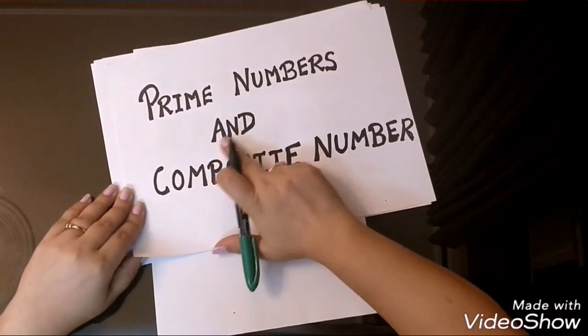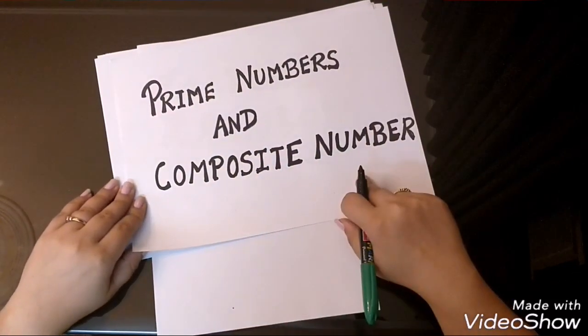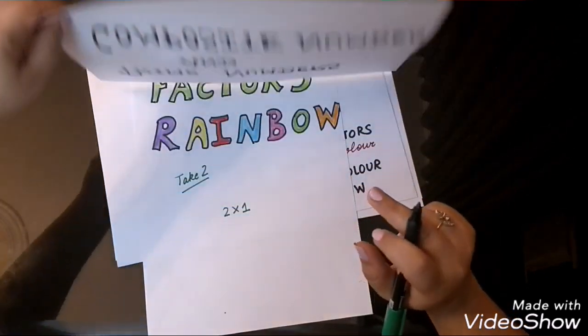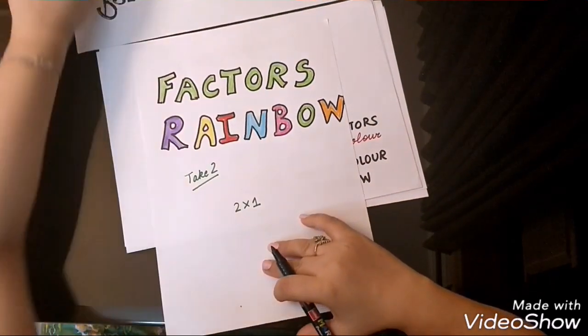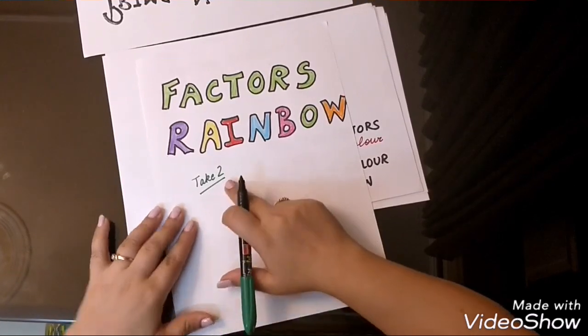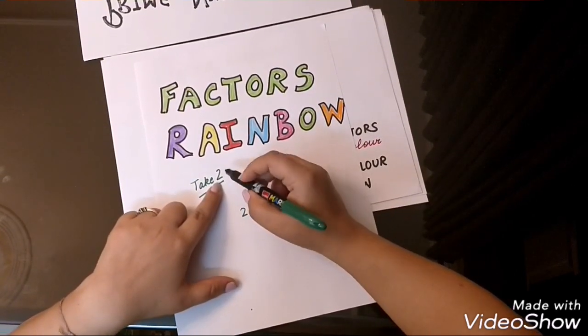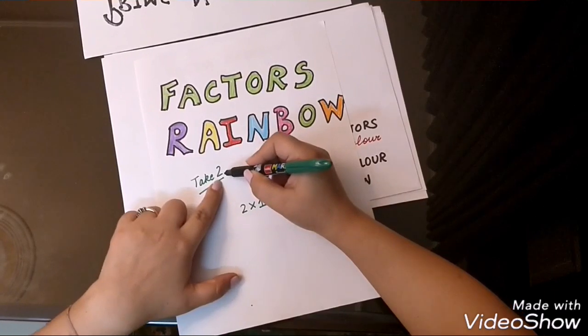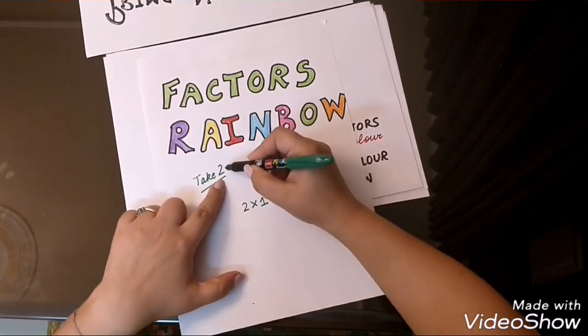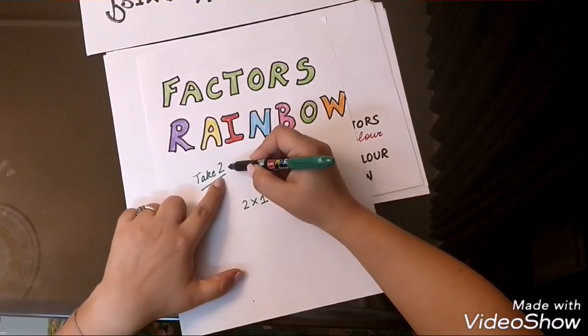Today, we will learn about prime numbers and composite numbers. For that, we will make factor rainbows. Students, as you know that for making factors, we need to see how many pairs will make the product of this number. Like, let's take the example 2.